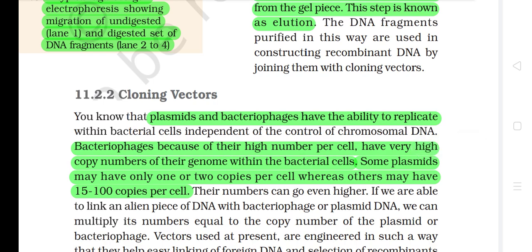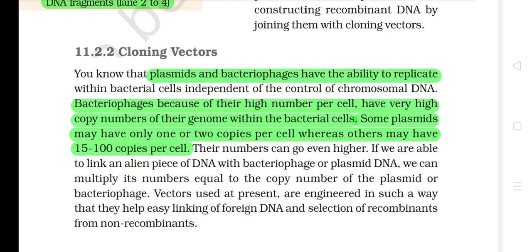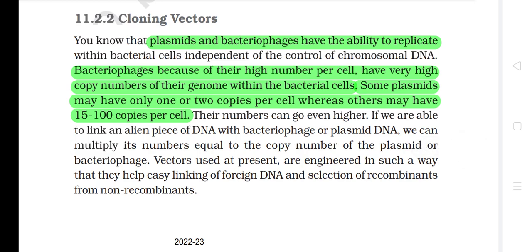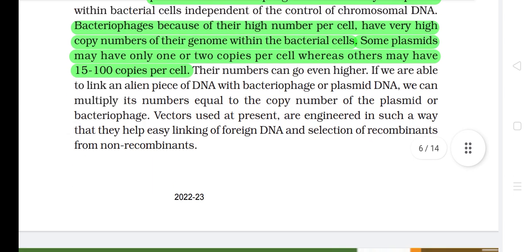11.2.2 Cloning Vectors. Plasmids and bacteriophages have the ability to replicate within bacterial cells independent of the control of chromosomal DNA. Bacteriophages, because of their high number per cell, have very high copy numbers of their genome within the bacterial cells. Some plasmids may have only one or two copies per cell whereas others may have 15 to 100 copies per cell, and their numbers can go even higher. If we are able to link an alien piece of DNA with a bacteriophage or plasmid DNA, we can multiply its numbers equal to the copy number of the plasmid or bacteriophage. Vectors used at present are engineered to help easy linking of foreign DNA and selection of recombinants from non-recombinants.